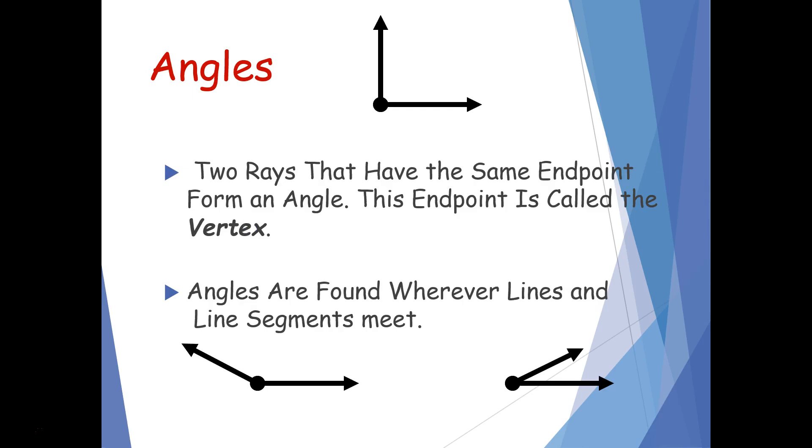Next, we're going to talk about angles. Angles are two rays that share the same endpoint and they form an angle. The endpoint that both rays share is called the vertex.